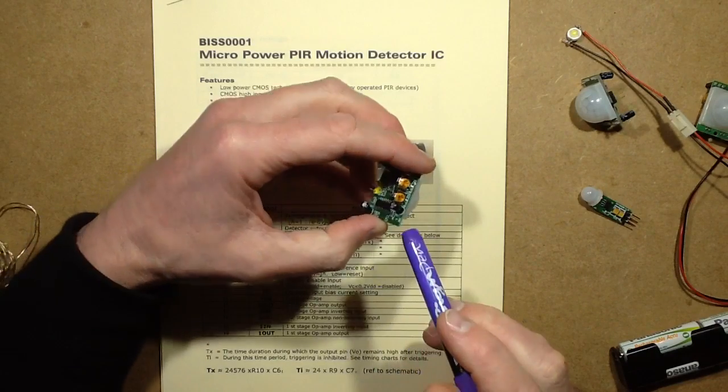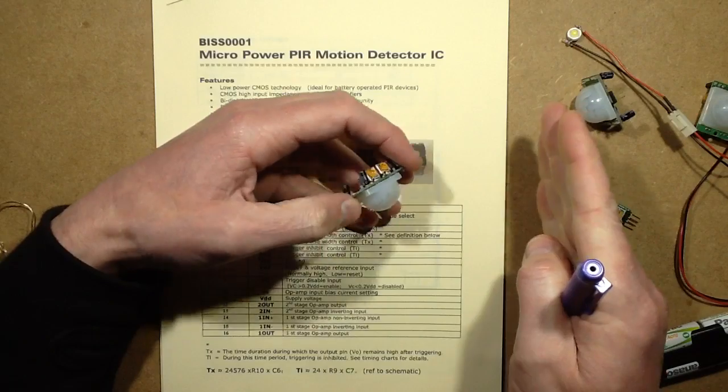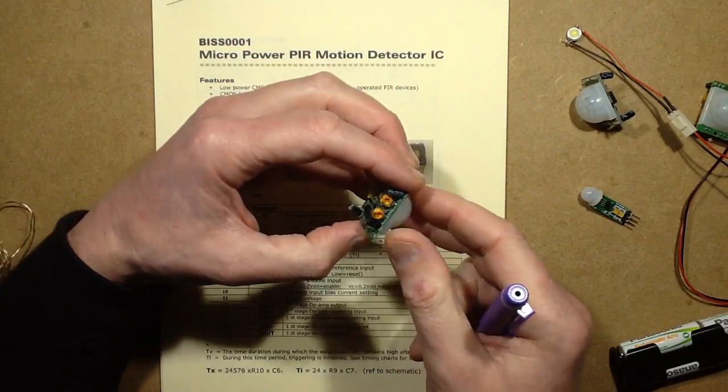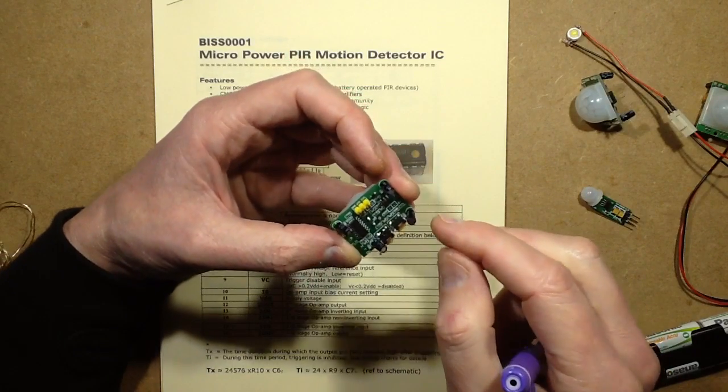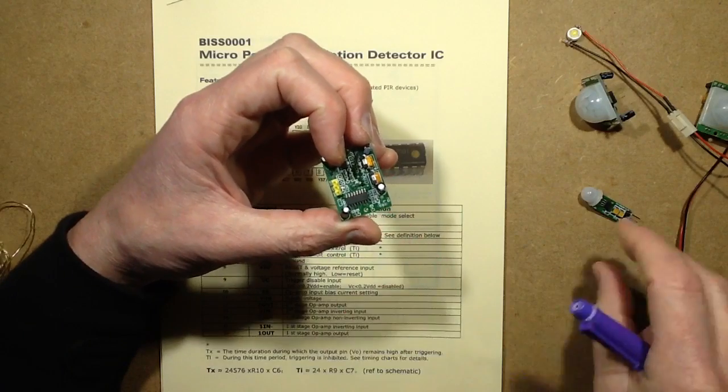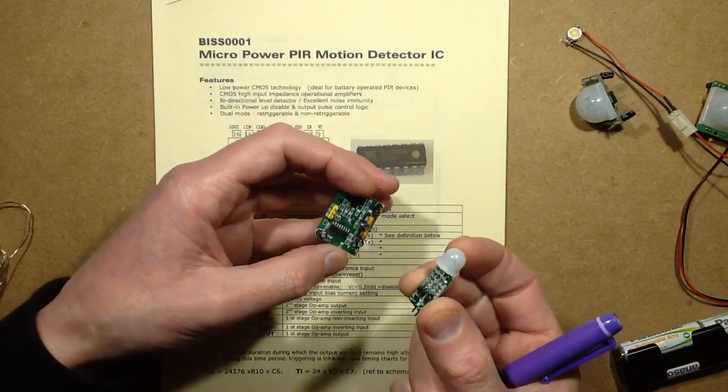However, if you set it to re-triggerable mode, every time it detects movement it just extends the time delay. It resets it to zero, so that if there's continuous movement the output will stay on all the time. In the case of these, that's with the link set to the position H, which is high, or as it comes with these ones. That function isn't available in this, it's just pre-configured for the re-triggerable.